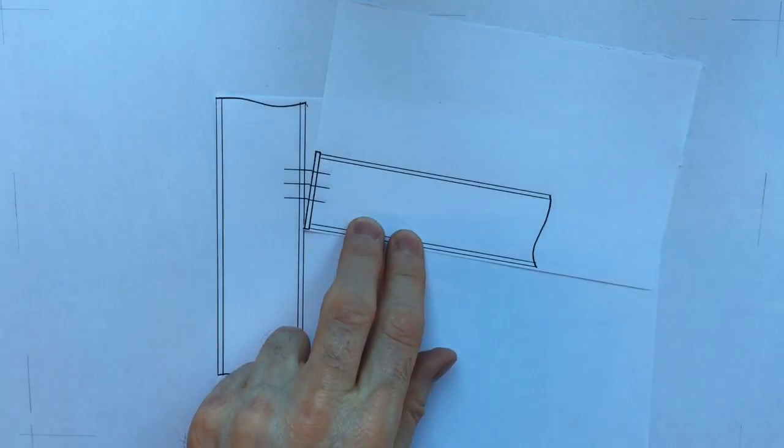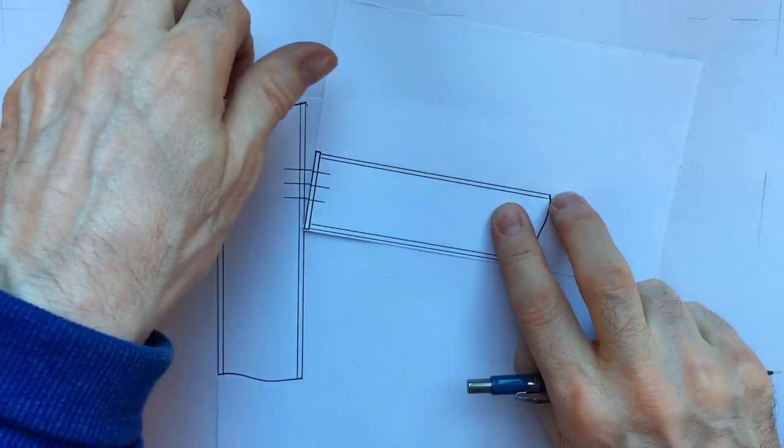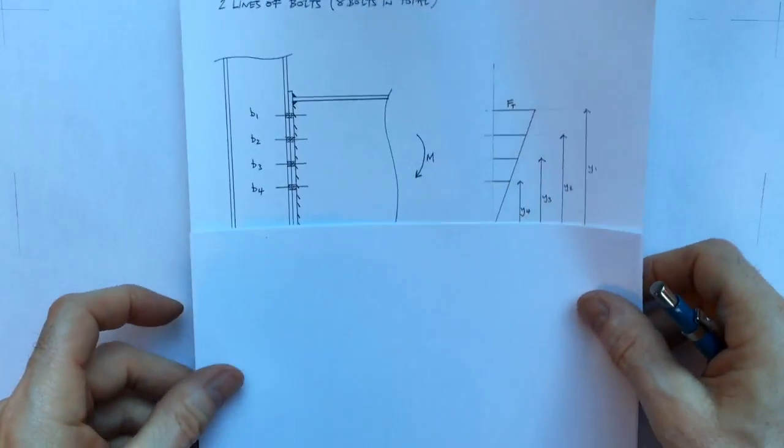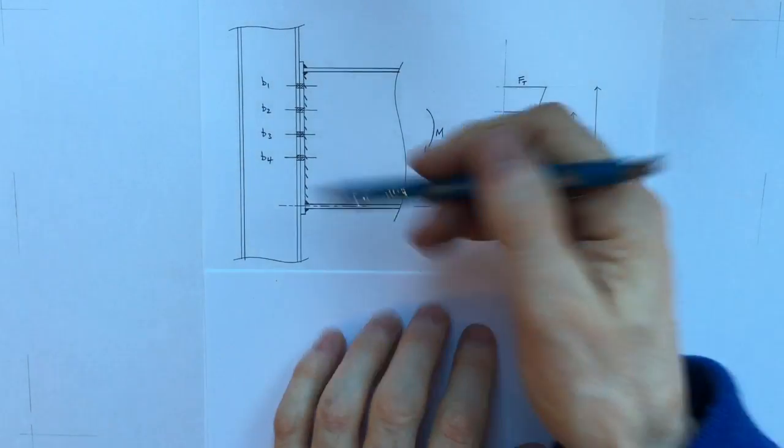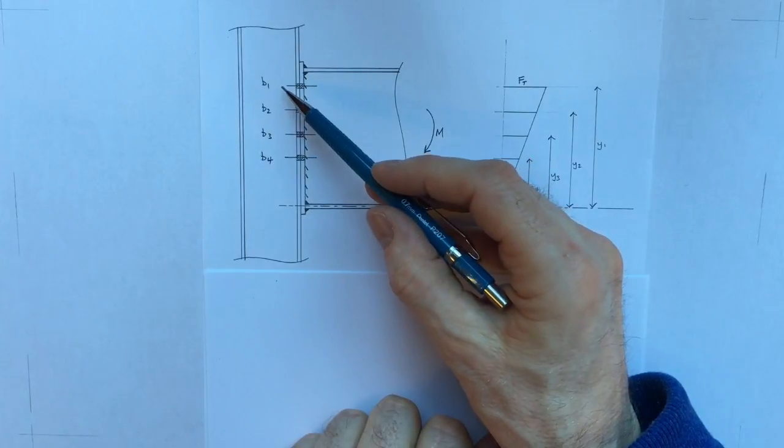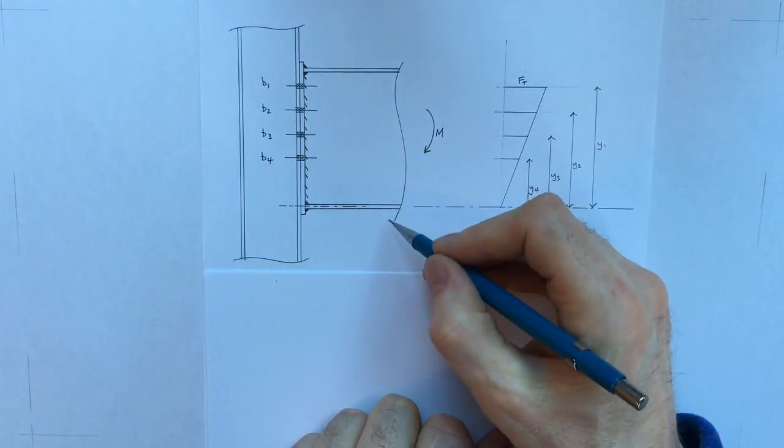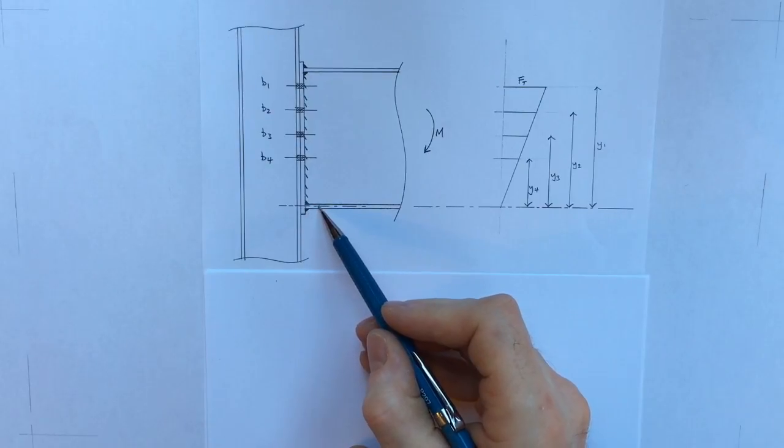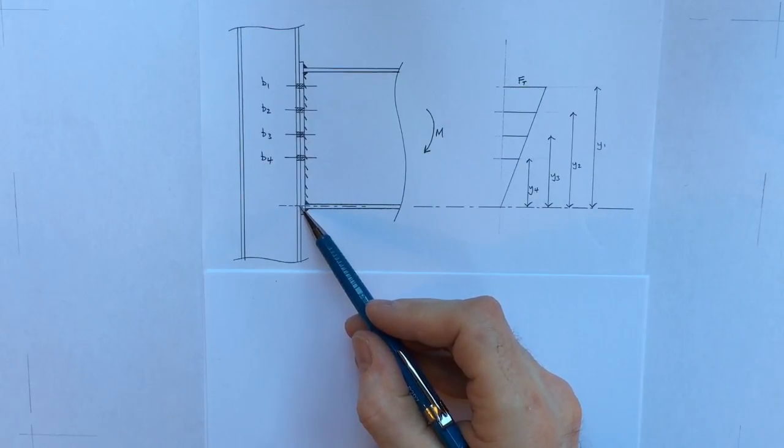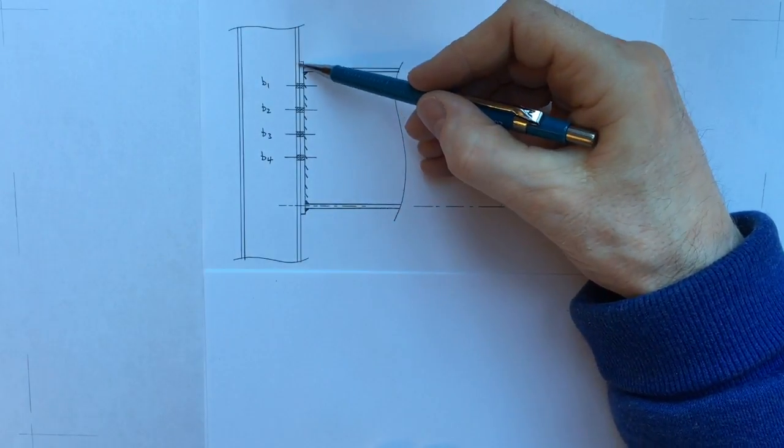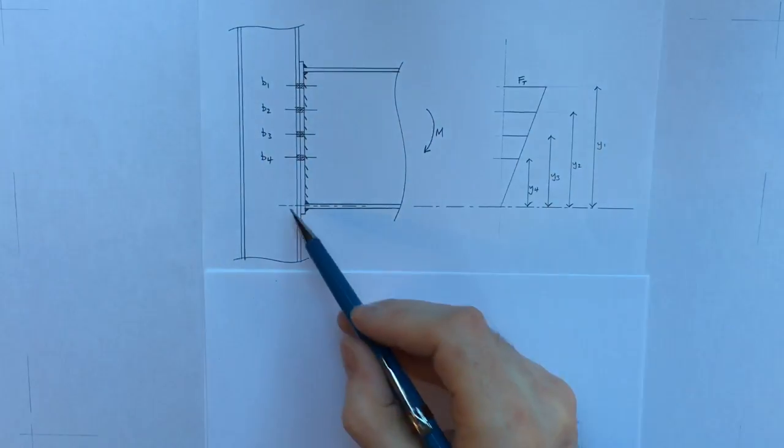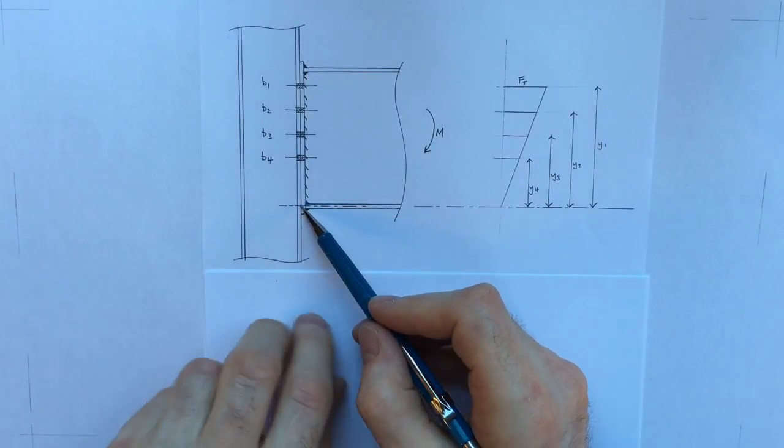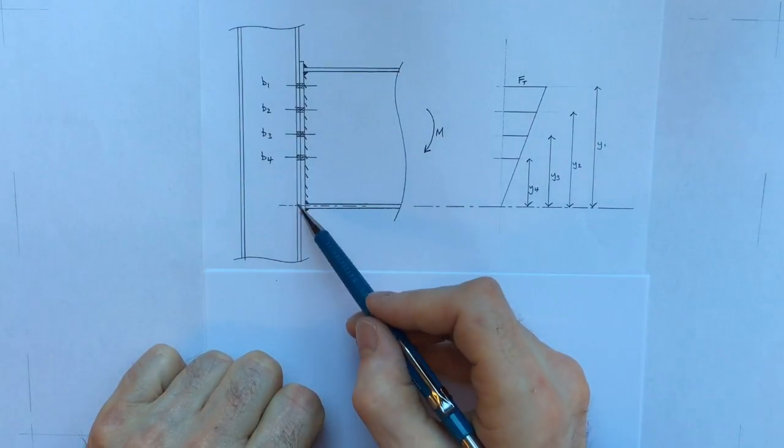Let's have a think about how we can actually calculate the forces in the bolts. This connection has got four bolts in it, bolt rows b1, 2, 3 and 4. It's got a bending moment applied and the rotation is going to take place around a certain point where the center line of the flange, that's the stiffest point, coincides with the interface of the connection. What's really important is we know the distance of each bolt from the point of rotation.